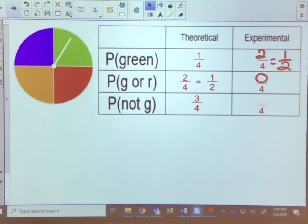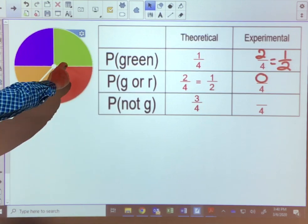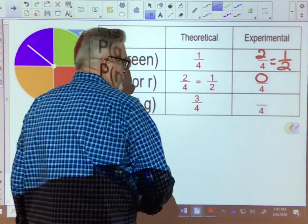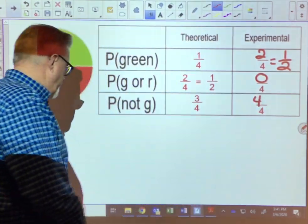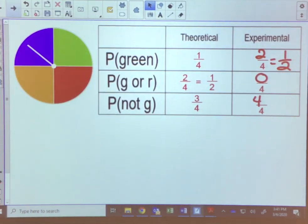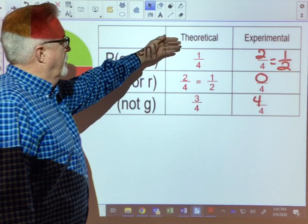On this next one it says the probability of not green. Our theoretical probability was three-fourths. Let's go ahead and try experimental. So first time we're a winner because it's not green. Second try, again it's not green. Third spin we've got red, that's not green. And our fourth try we've got purple. So all four times we got something that was not green.